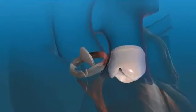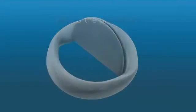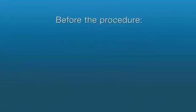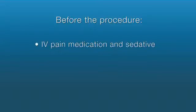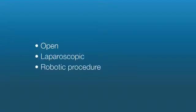An aortic valve replacement is performed to restore the valve to normal function. Before your procedure, an IV line will be started in your arm to provide fluids and medications. A catheter will be inserted into your bladder to drain urine. Aortic valve replacements are done under general anesthesia, meaning you will be asleep for the duration of the operation, and a tube will be placed through your mouth and into your windpipe to help you breathe during surgery. Your surgeon may perform aortic valve replacement using an open, laparoscopic, or robotic procedure.